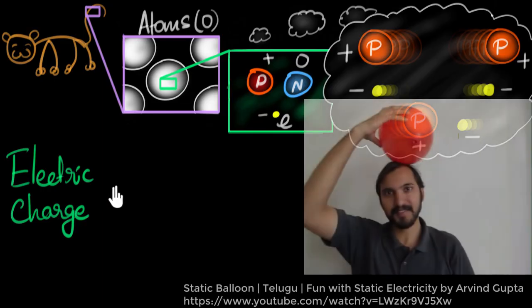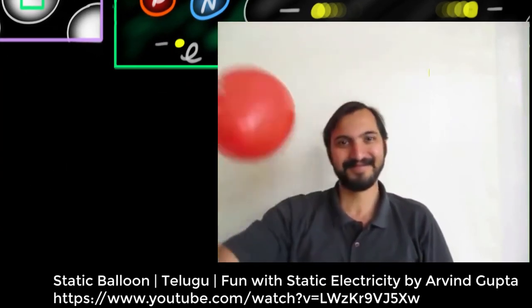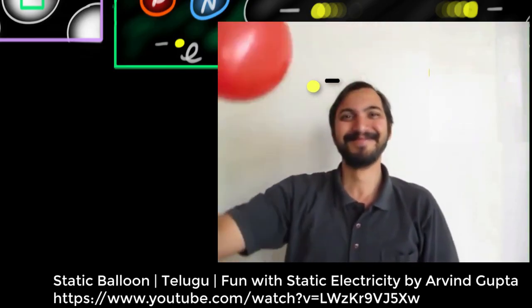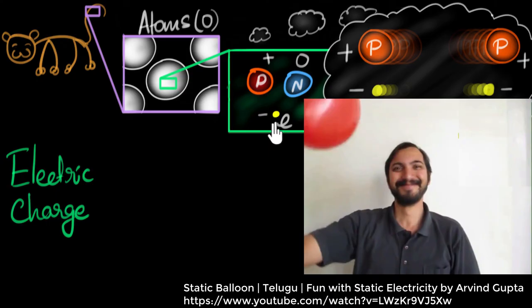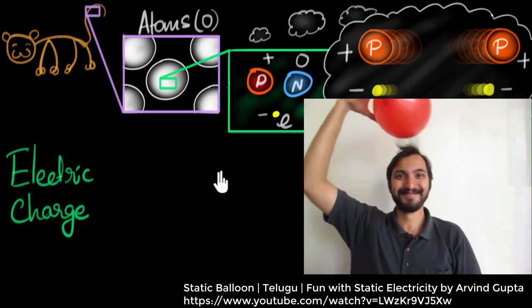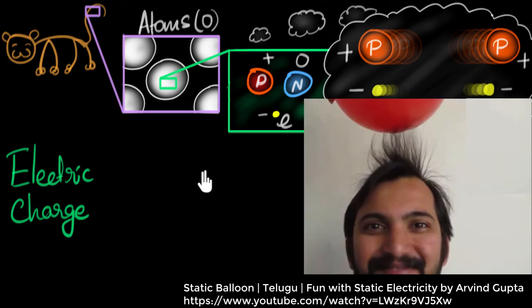However, when you rub this neutral balloon on this neutral hair, turns out that due to friction generated, some of the electrons from the hair get transferred into the balloon. And now, since the atoms of the hair has lost some of the electrons, it has extra protons. And as a result, the hair is now extra positive. And similarly, because the balloon has gained electrons, the atoms of the balloon, or the balloon itself, has now become extra negative. And because of this positive and negative attraction, we see the hair standing up. So the force over here is exactly the same as the electric force that we find over here. Amazing, isn't it?